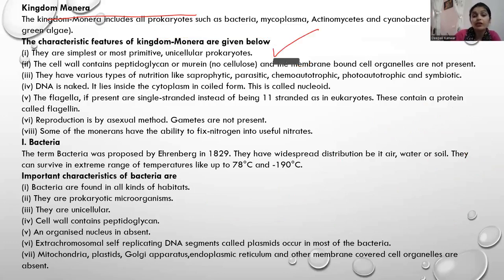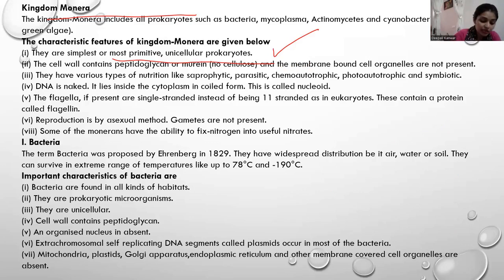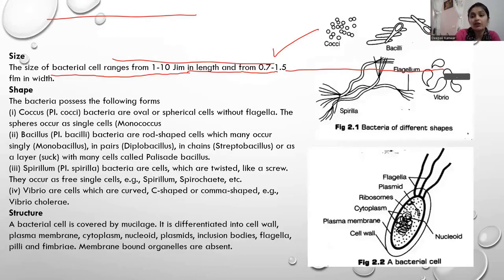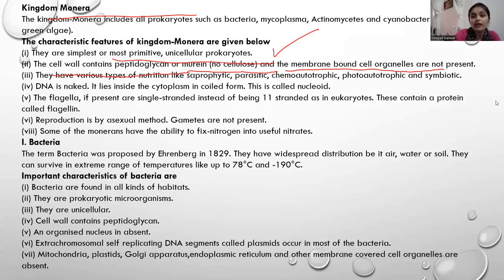They are the most primitive and unicellular organisms — primitive means they were found earliest, and unicellular means single-cell organisms. Their cell wall is made of peptidoglycan, meaning cellulose is not found in their cell wall. Membrane-bound cell organelles are not present in them.